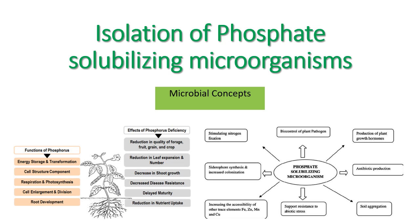Welcome back to Microbial Concepts. Today we are going to discuss a practical related to biofertilizers — that is isolation of phosphate solubilizing microorganisms. The isolation is done, then the organism is purified, and on large scale the cell mass is produced and then it is applied as a biofertilizer in fields.